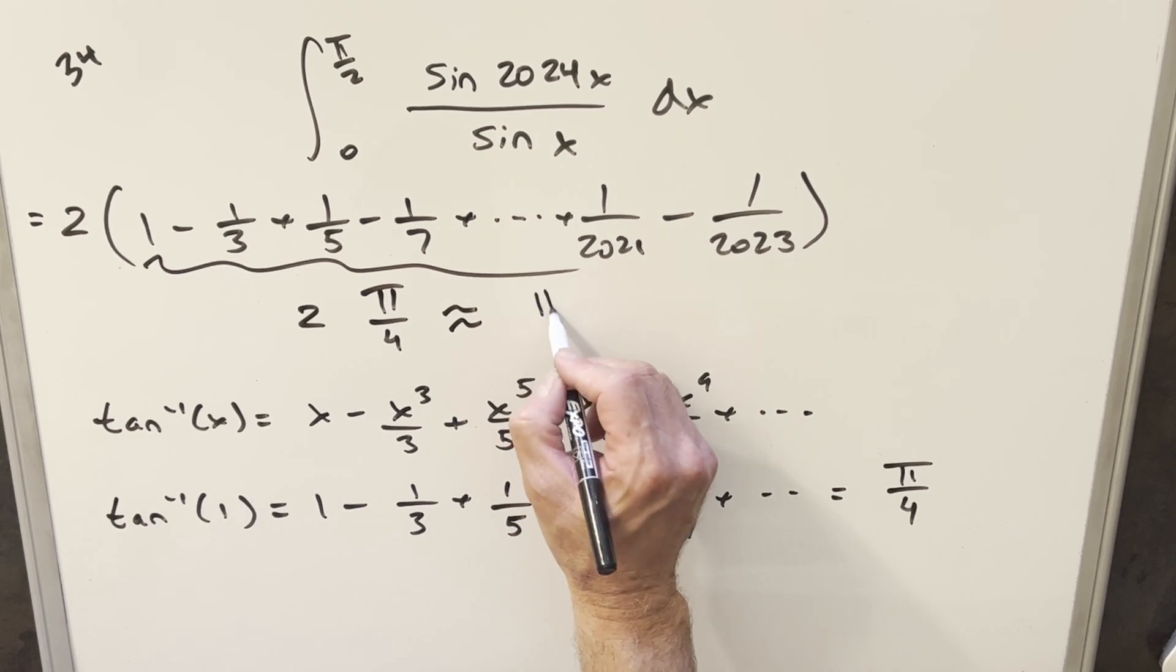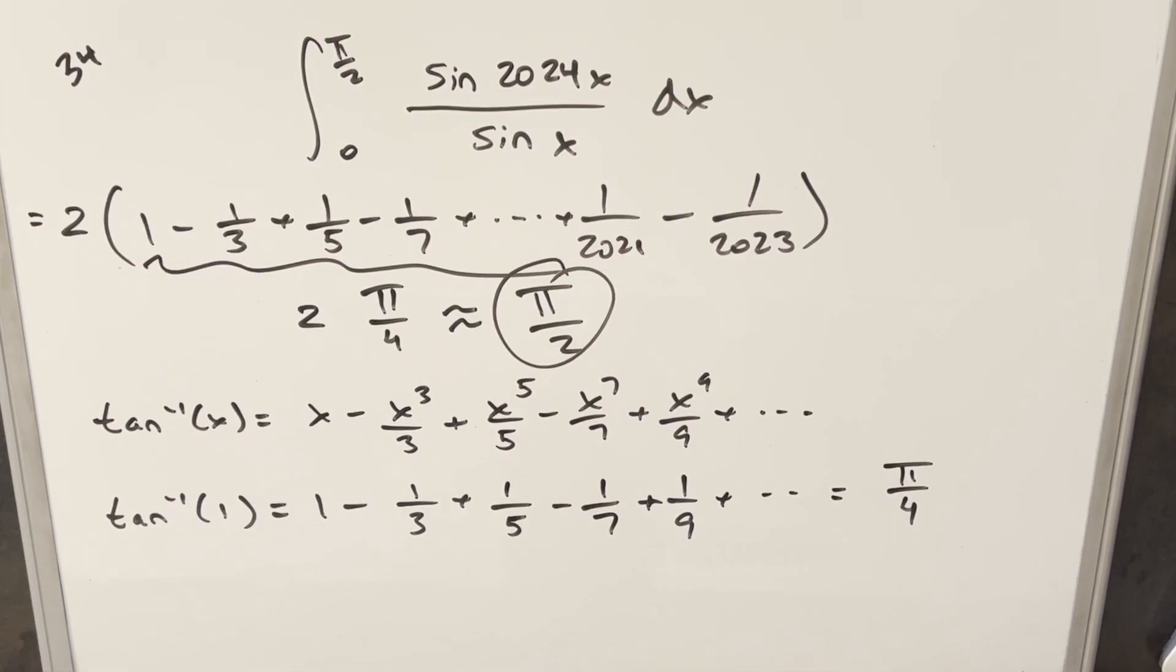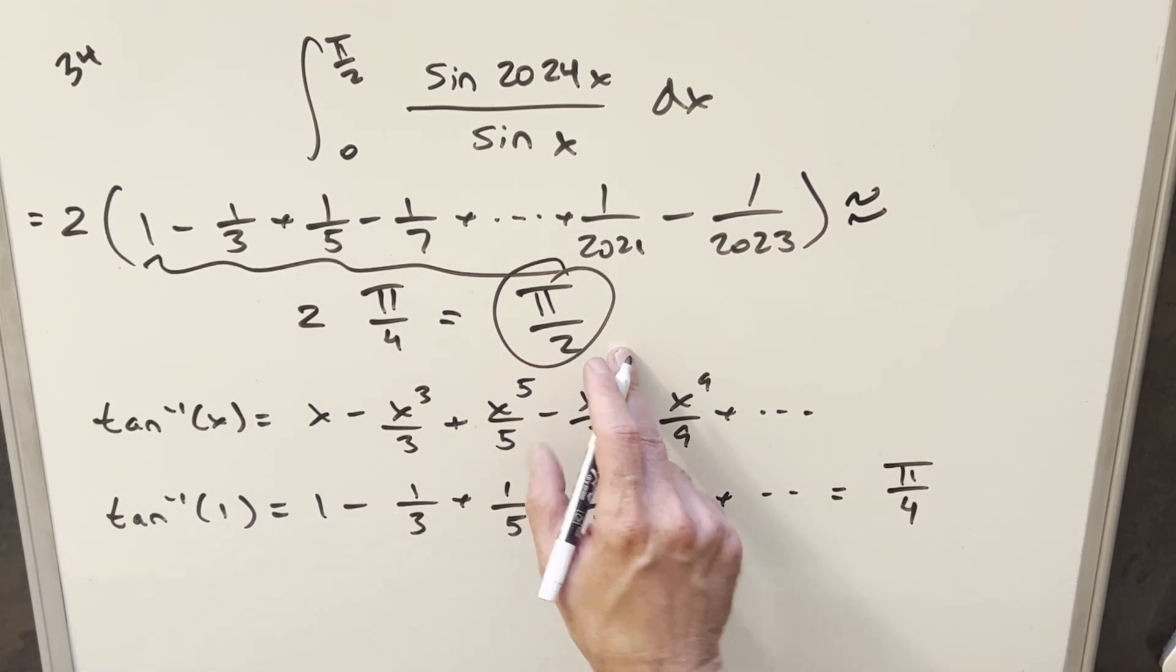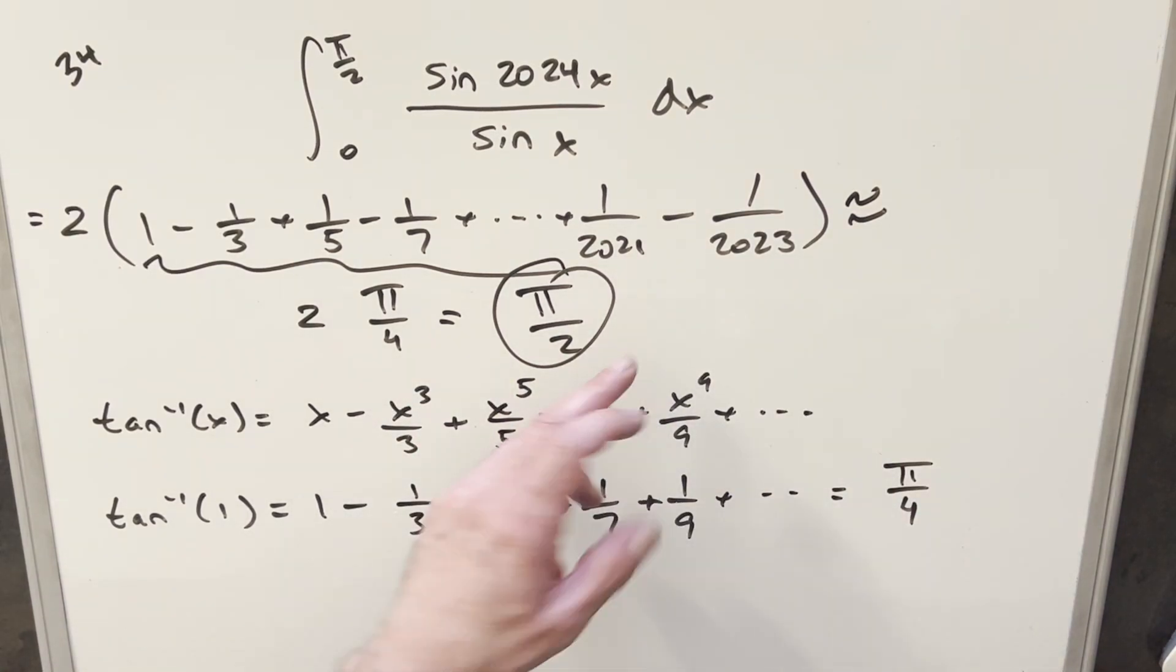We just need to multiply it by 2. And so for our approximation of this, we just get π/2. And actually, I should probably write this a different way. Like, this is actually equal because we know that 2 times π/4 is π/2 exactly. But here, this is all approximate. So this is our approximation. So this here will be pretty close. Clearly not exact, but not too bad. Okay, really good one from Vienna 2024. Thanks everyone for watching. Have a good day.